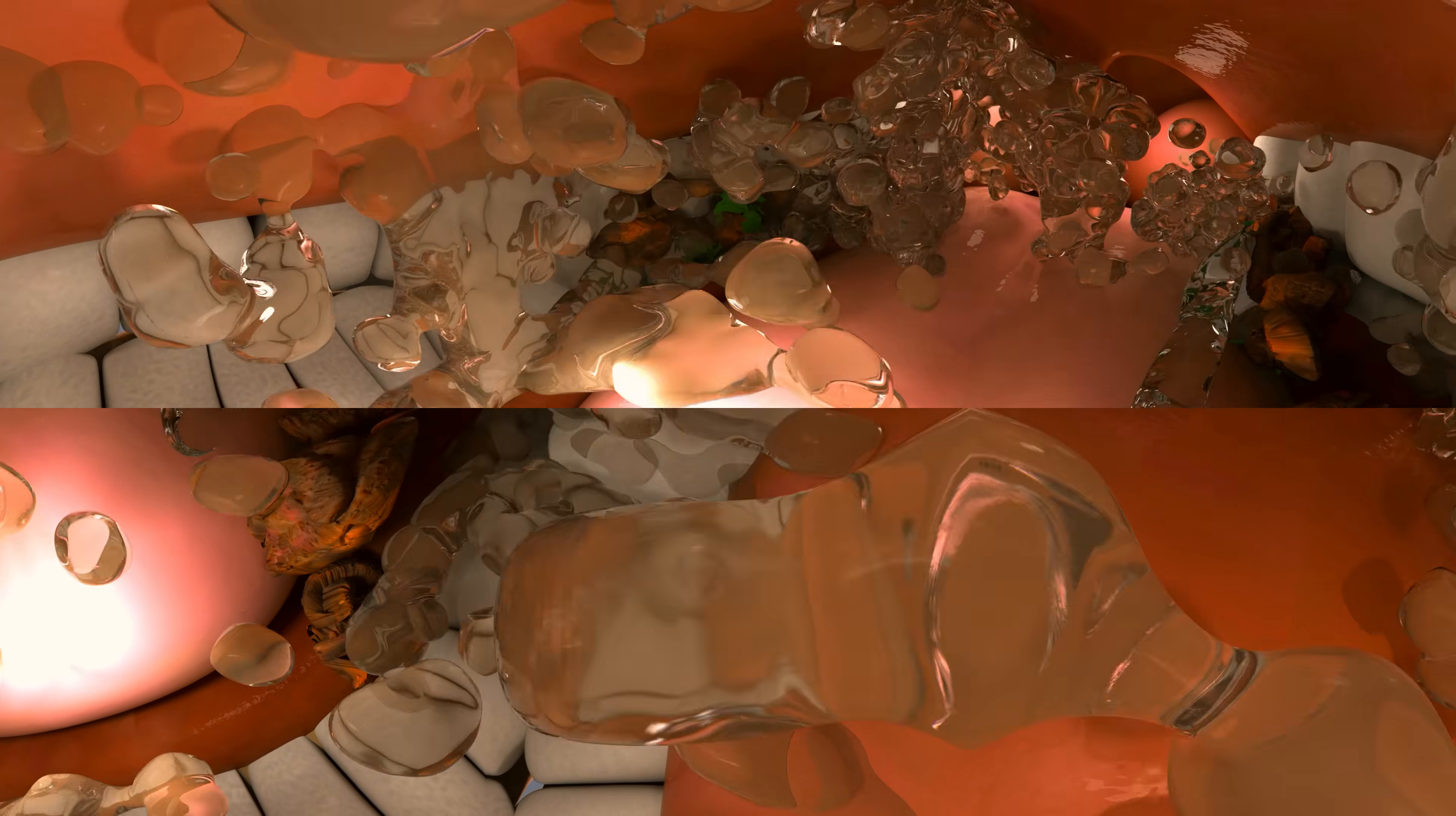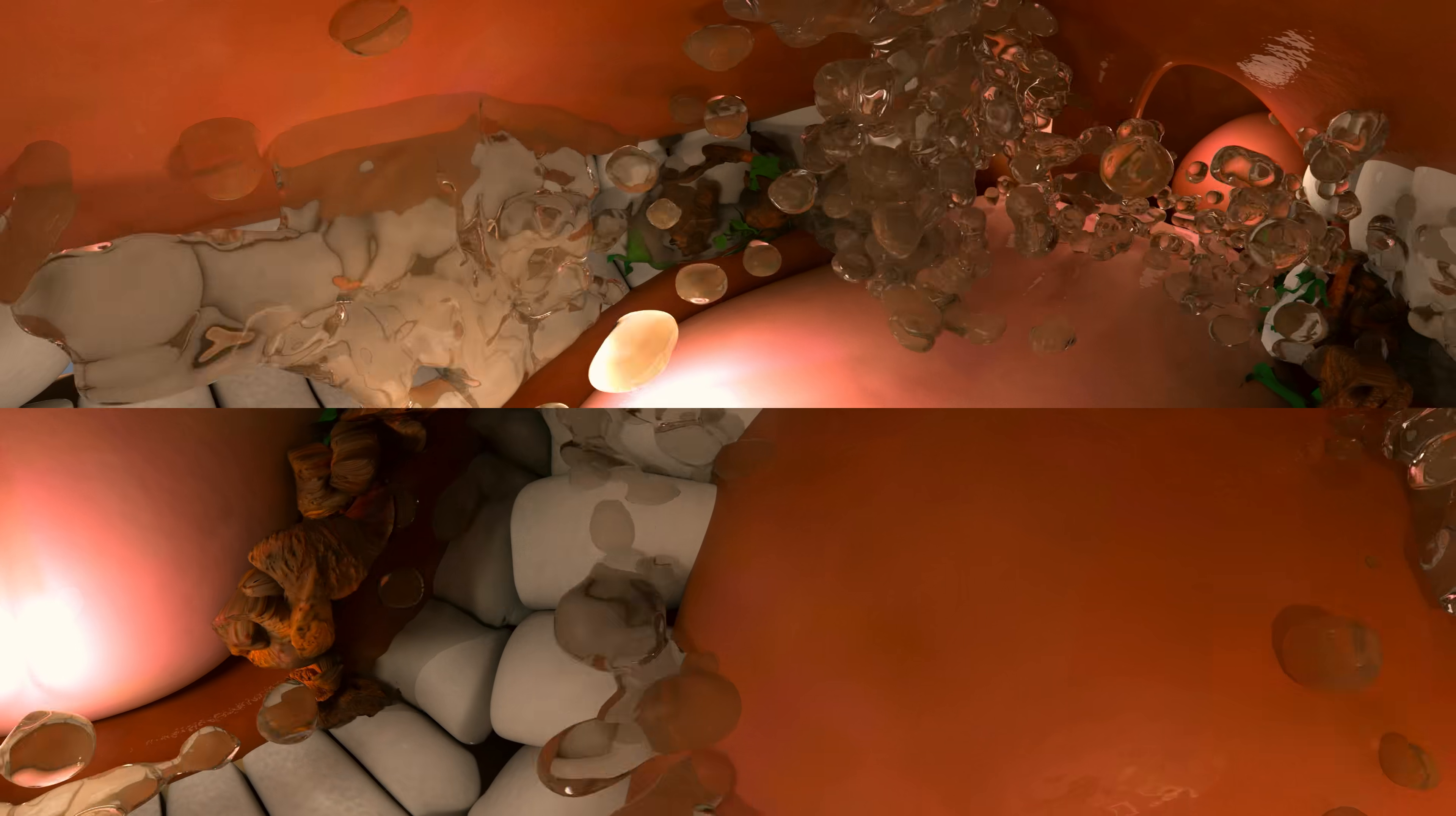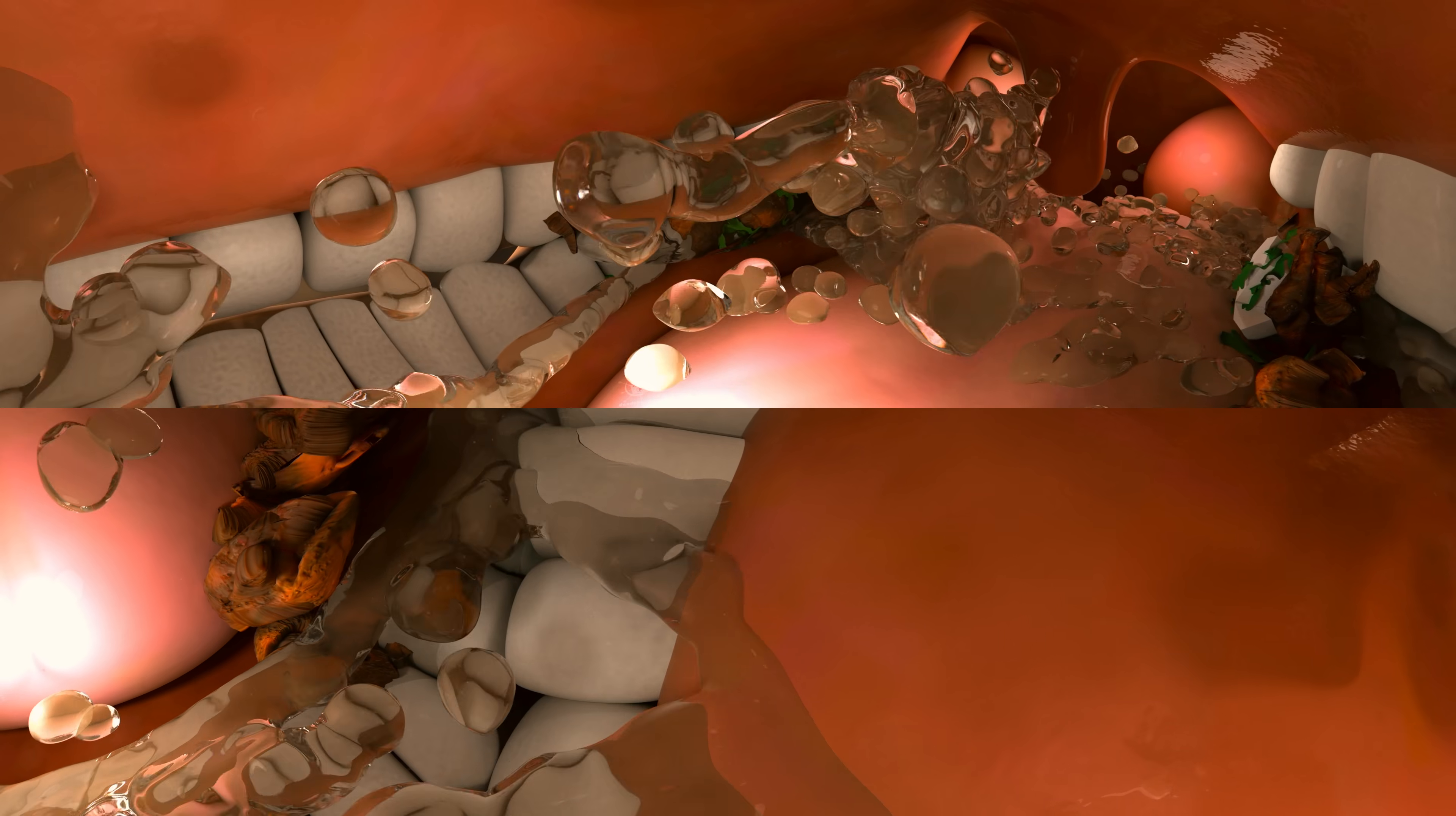The epiglottis is a flexible flap at the end of the larynx in the throat. It acts as a switch between the larynx and the esophagus.